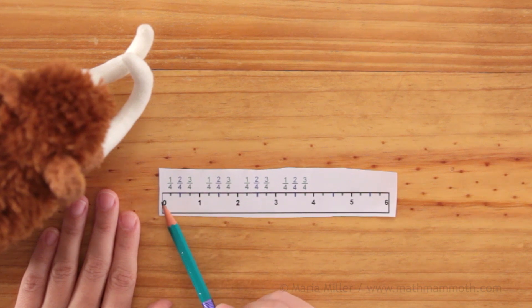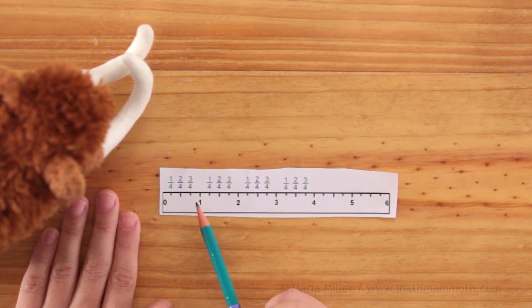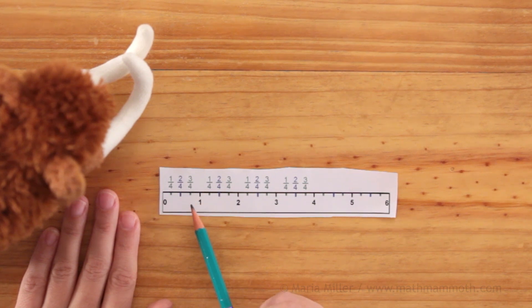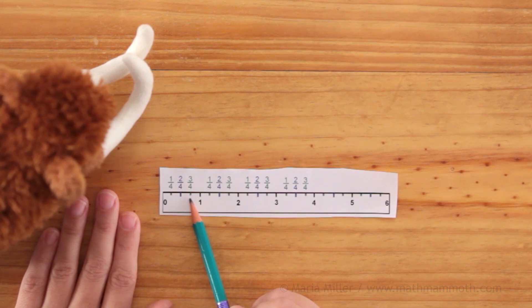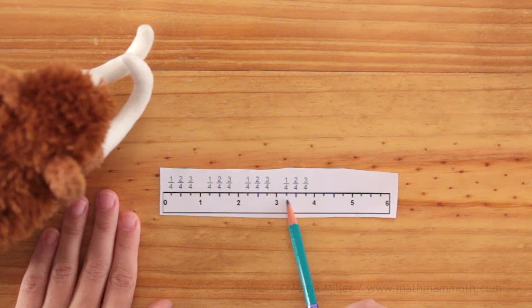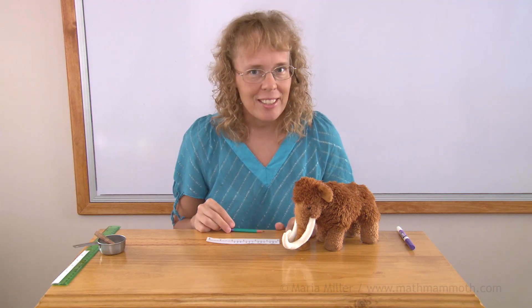So from here to here would be one-half of an inch or two-fourths. And then this green mark is for three-fourths of an inch. So from zero all the way here would be three-fourths of an inch. And then if you have a line from zero here all the way over here, then the line would be three and one-fourths inches long. Let's look at all that and measure some lines.